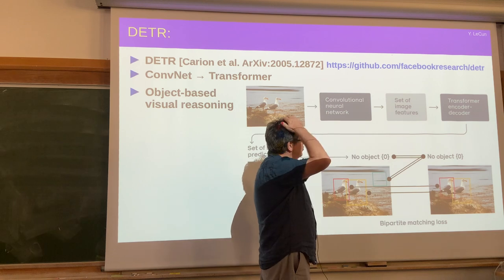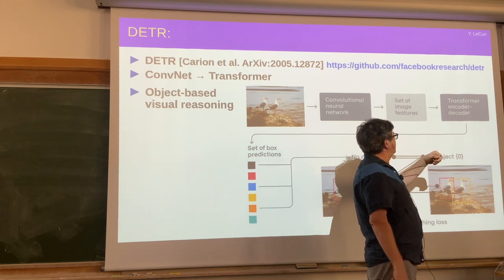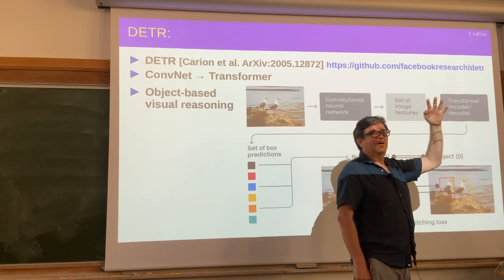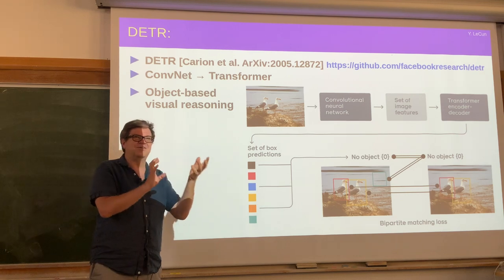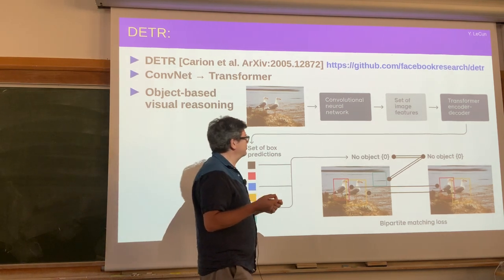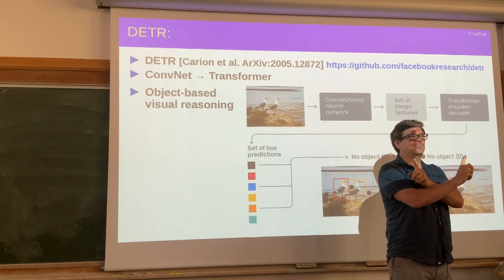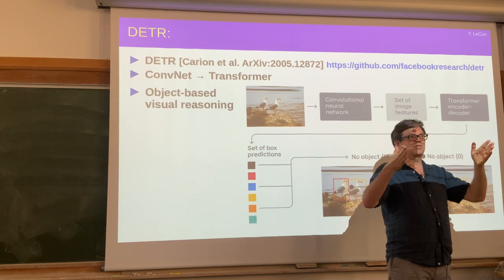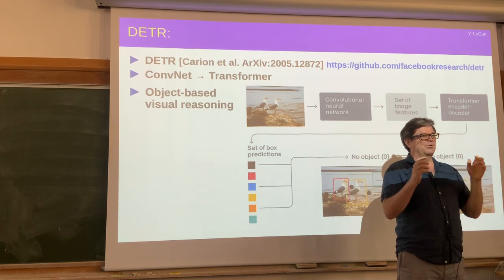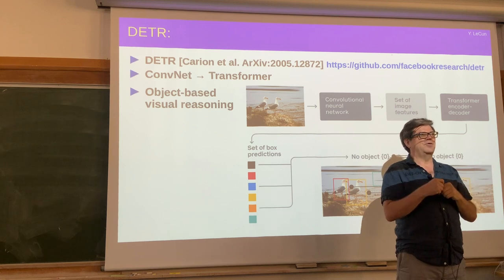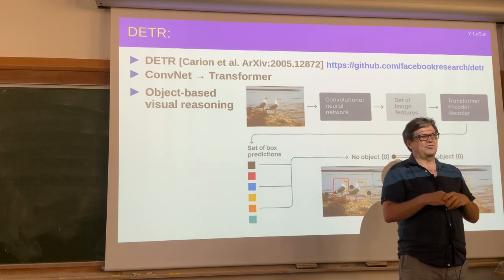A transformer is a kind of neural network where the key property is that whatever function it computes is equivariant to permutation. You feed it a set of tokens — vectors — run them through the network, and get the same number of output tokens. If you permute the incoming vectors, you get the same result with the same permutation. This is really important when the task has to do with relationships between tokens rather than the individual content of each.